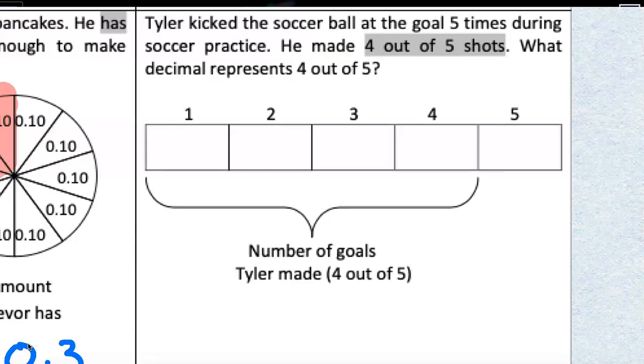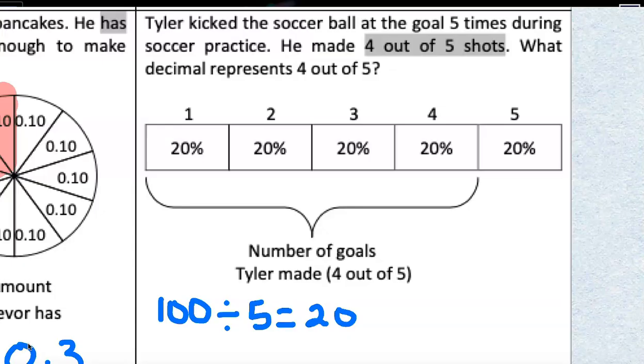Let's try using this model to help us. So, Tyler kicked the soccer ball at the goal five times. So, I have five parts on that bar. What decimal represents the four out of five shots that he made? Well, let's figure out how much each of those bars would be worth. Let's think of it as a percent. So, 100% of that bar is represented by the whole thing. But if I divide it into five spots, I'm going to take 100, since percent means out of 100, 100 divided by five parts equals 20. So, each part represents 20%.